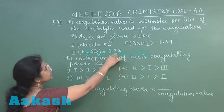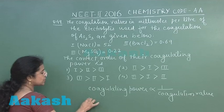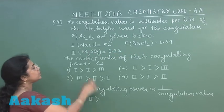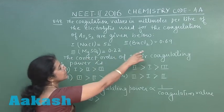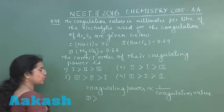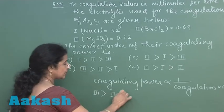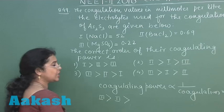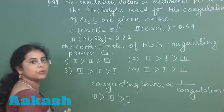Here the minimum coagulation value is given for magnesium sulfate, so maximum coagulation ability will be for magnesium sulfate. The next is 0.69 for barium chloride, and maximum coagulation value is for NaCl, so its coagulating power will be minimum.